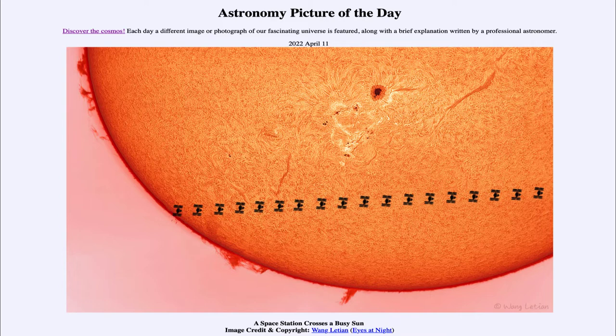Well, it is titled 'A Space Station Crosses a Busy Sun'. So what do we see here? This is an image of our sun in the background there, and we can see that it is indeed quite busy. It's a very active sun.